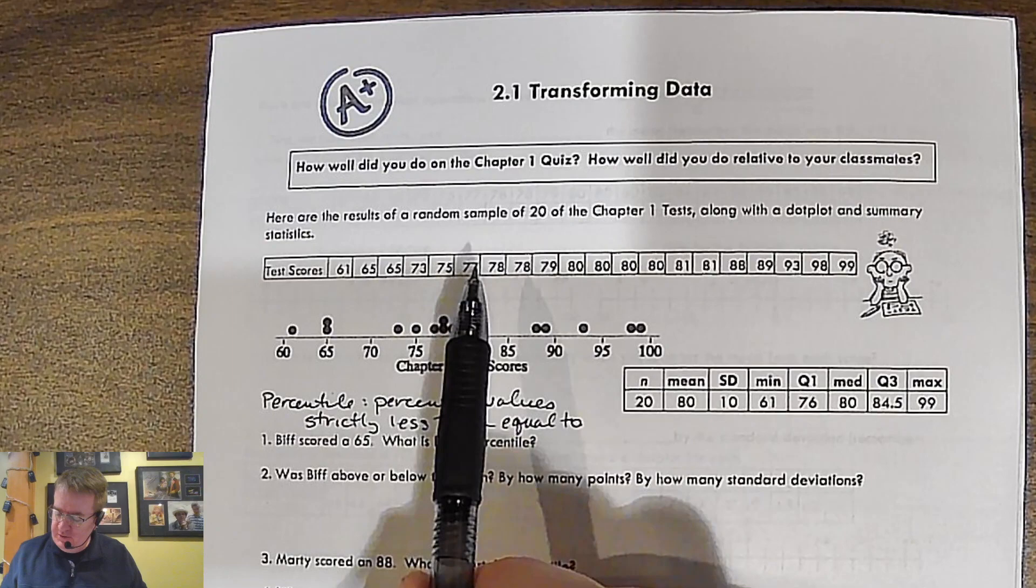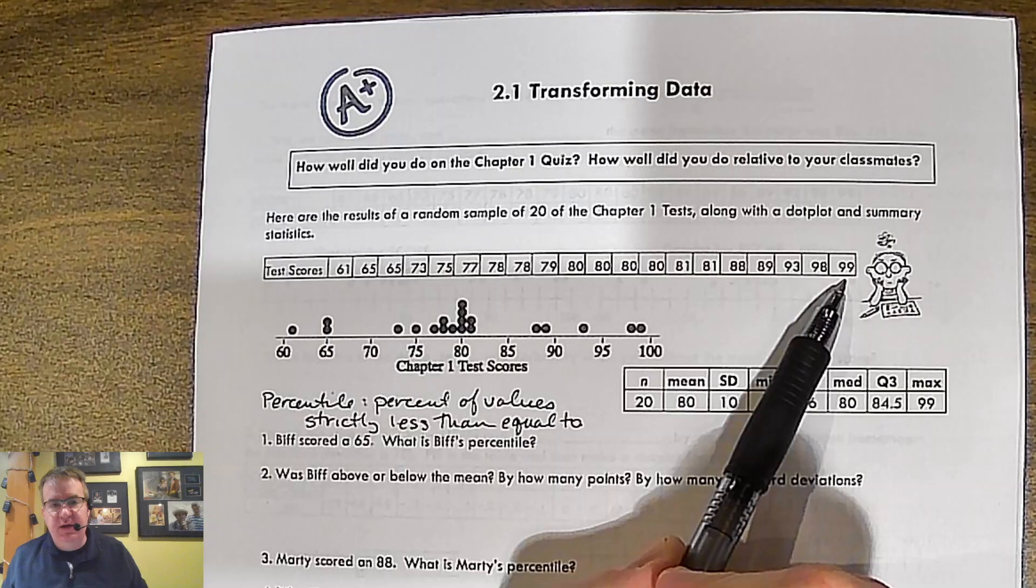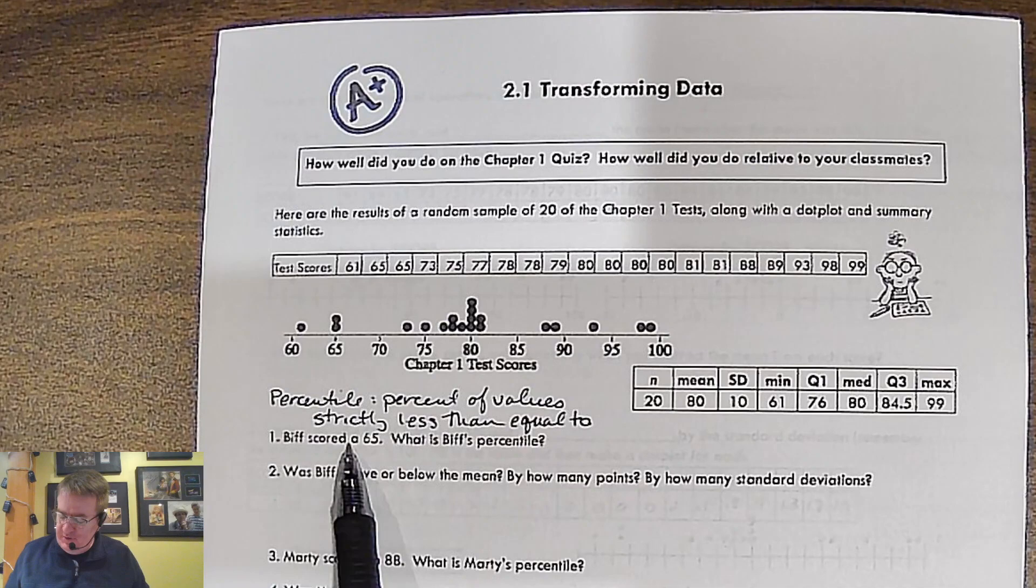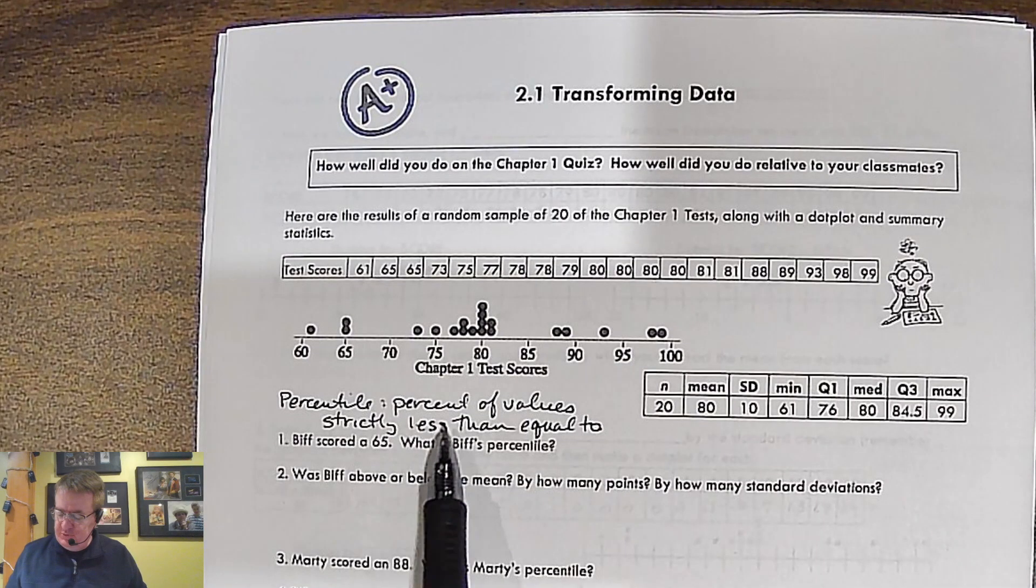So here is a sample of 20 test scores. We have scores from 61 up to 99. And then we made a dot plot, put out all the information, the mean, minimum, five number summary, standard deviation, all of that. Now here we say BIF scored a 65. What is BIF's percentile? Now what is a percentile?